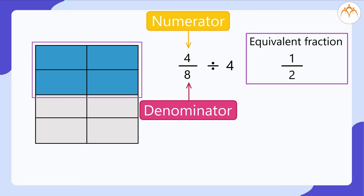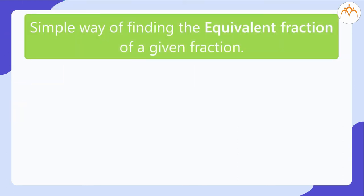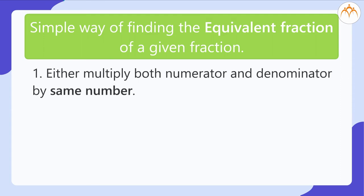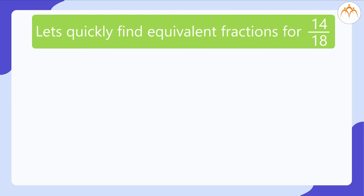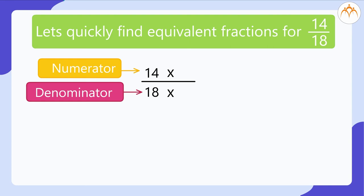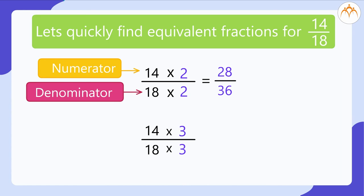That brings us to the simple way of finding the equivalent fraction of a given fraction. Let's quickly find equivalent fractions for 14 divided by 18. First, by multiplying both numerator and denominator by the same number — say by 2: 14 × 2 divided by 18 × 2 equals 28 divided by 36. Say by 3: 14 × 3 divided by 18 × 3 equals 42 divided by 54. You can try out the remaining ones by the same method.